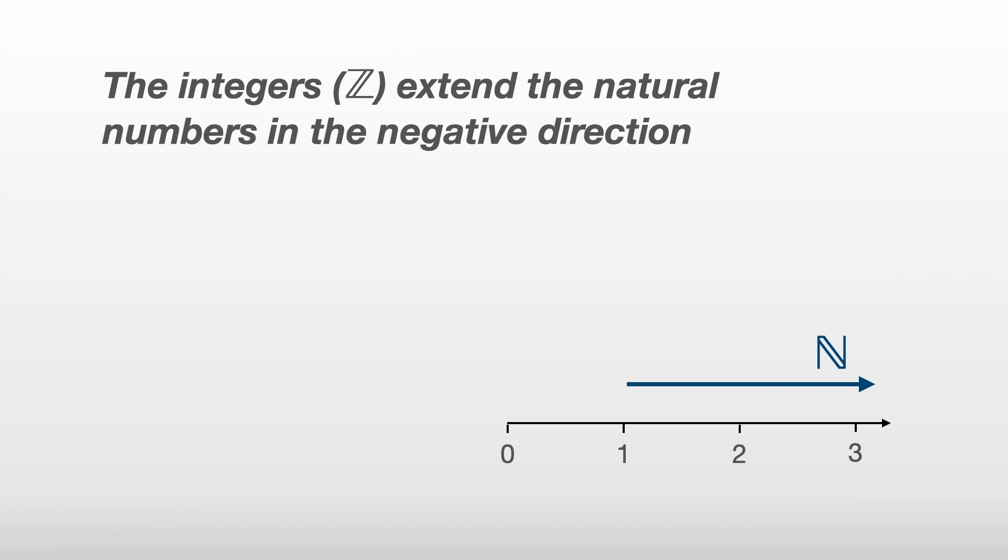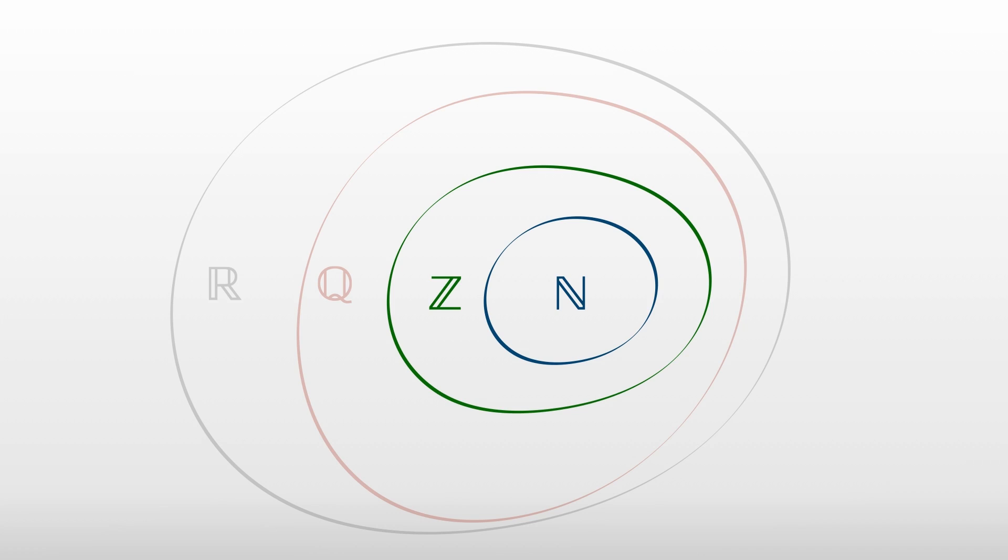The integers we denote with a barred Z after Zalen, the German word for numbers, extend the natural numbers in the negative direction, meaning the integers are closed under subtraction as well as addition and multiplication. And since every natural number is also an integer, we say that the natural numbers are a subset of the integers.